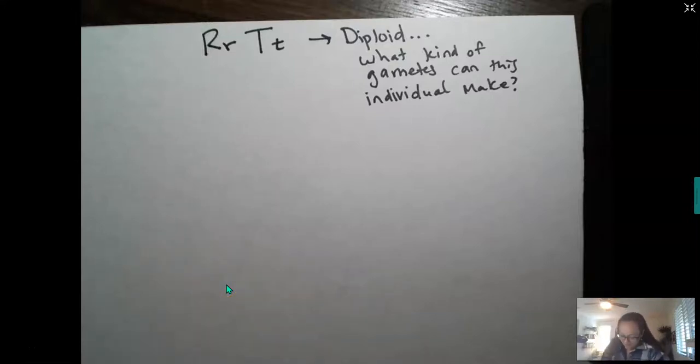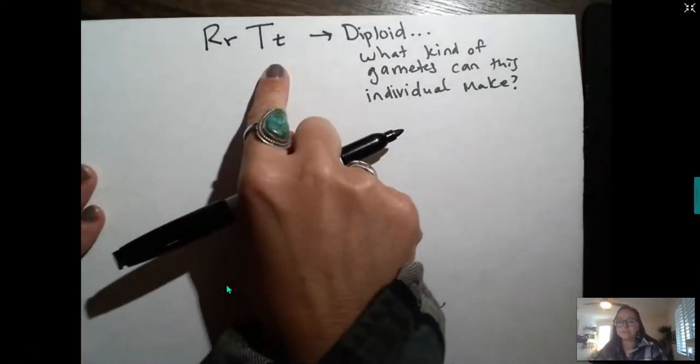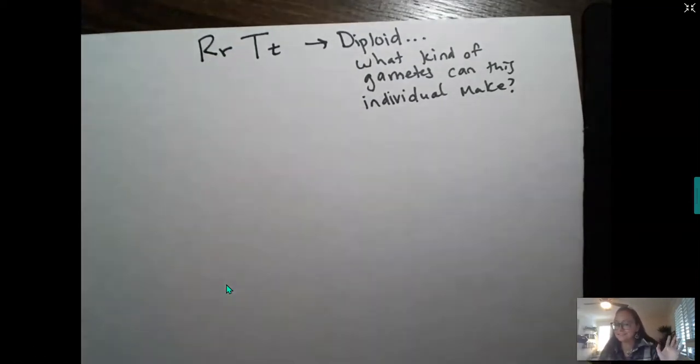Here we're going to look at two traits in organisms rather than just looking at a single trait like eye color, brown eyes or blue eyes. So here we're going to use two different genes. We have the R gene and the T gene, whether that codes for height or dimples, it doesn't really matter.